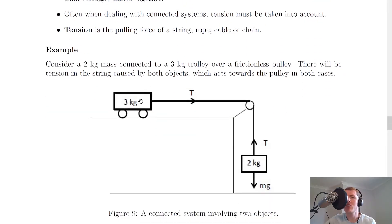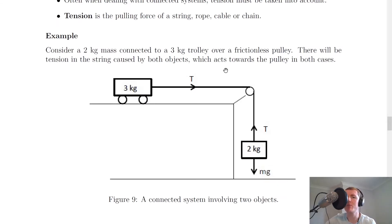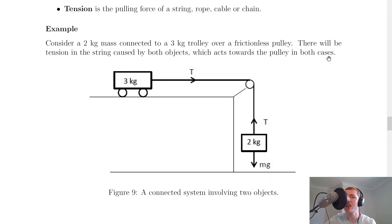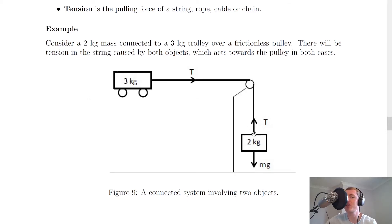Consider a two kilogram mass connected to a three kilogram trolley over a frictionless pulley. The pulley can rotate, so the string connecting the three kilogram mass to the two kilogram mass can move about this point. There will be tension in the string caused by both objects, acting towards the pulley in both cases. For the three kilogram mass, tension acts towards the pulley, and for the two kilogram mass, tension acts upwards towards the pulley. There is also a weight force downwards due to this mass.